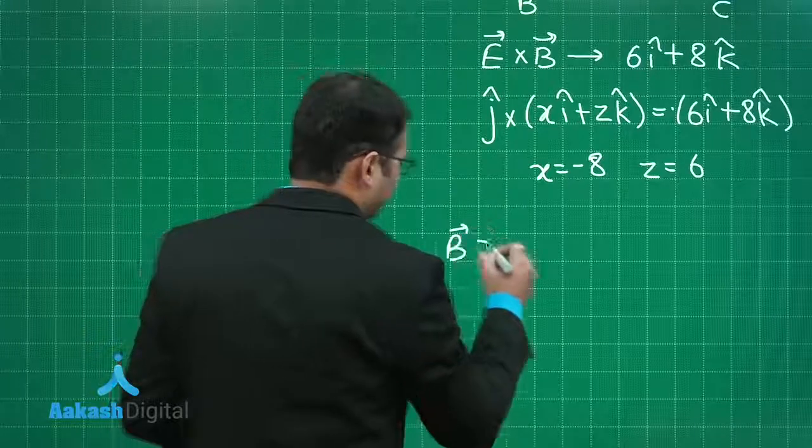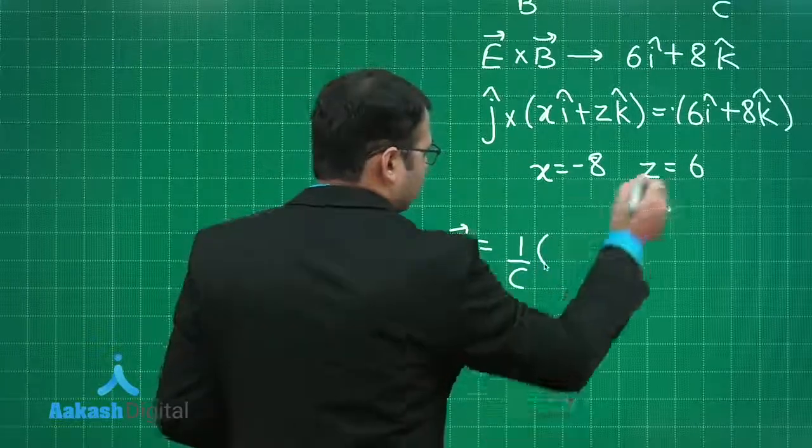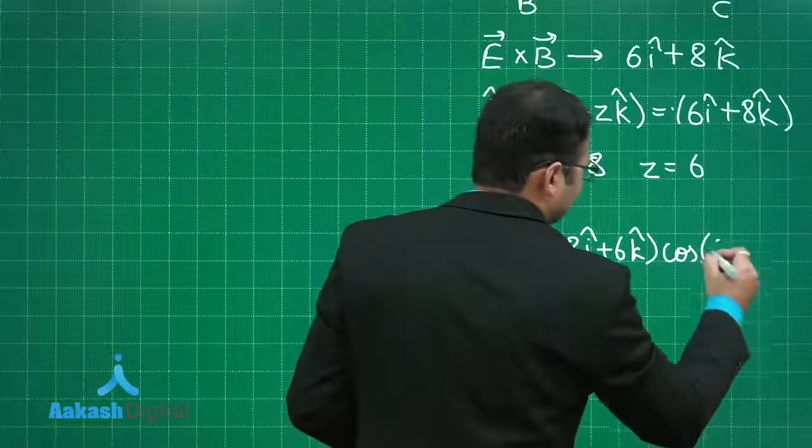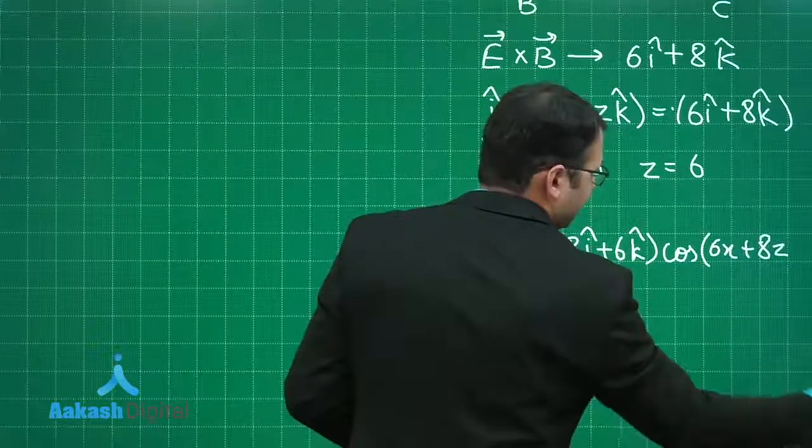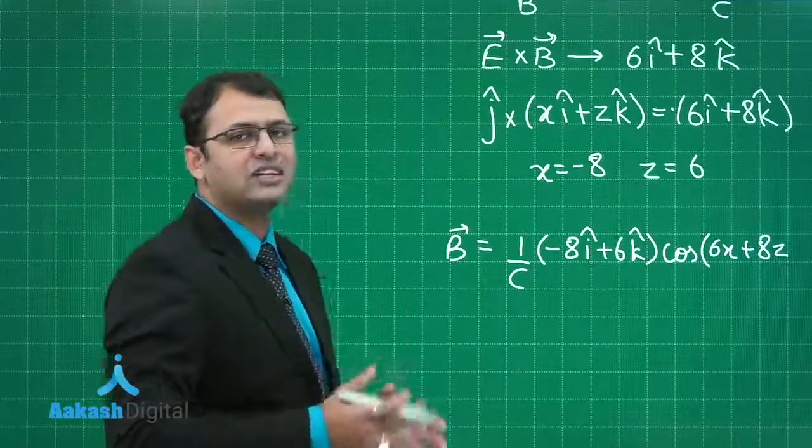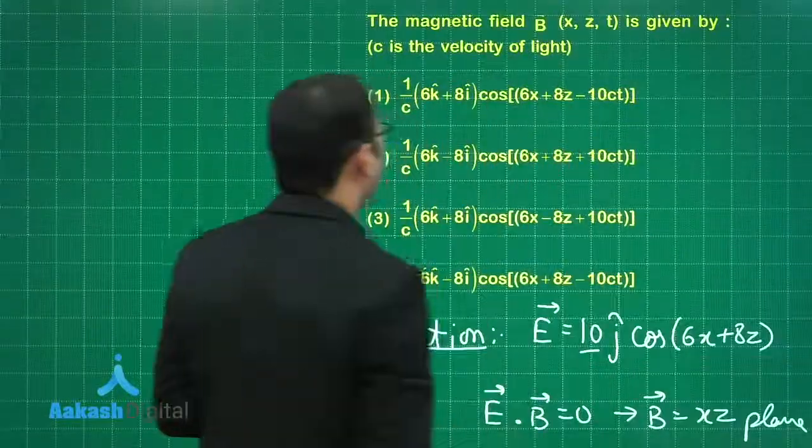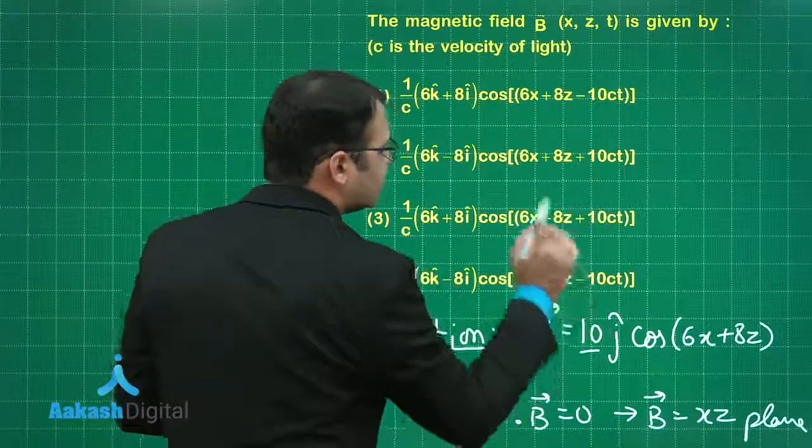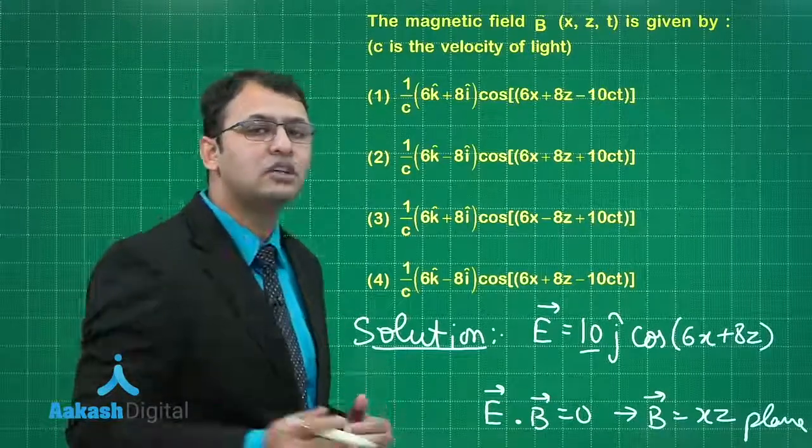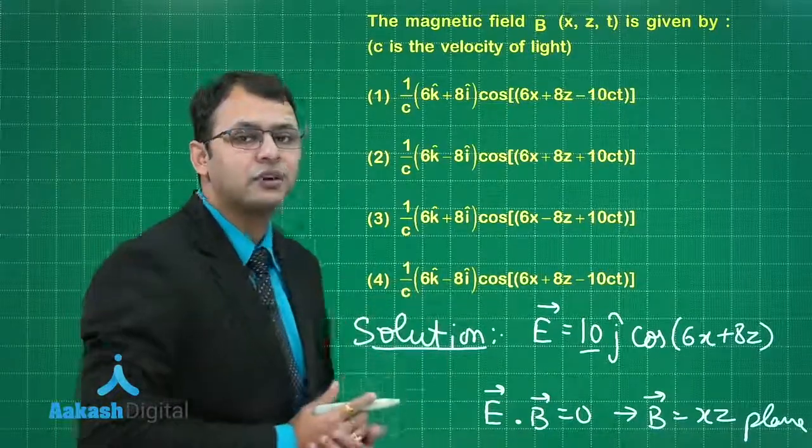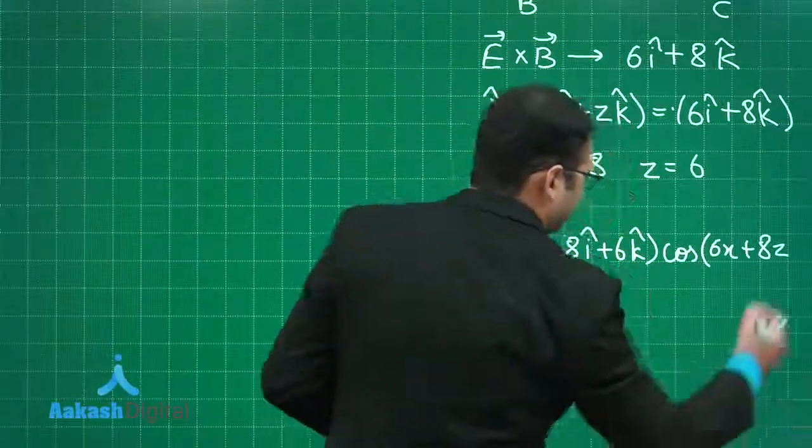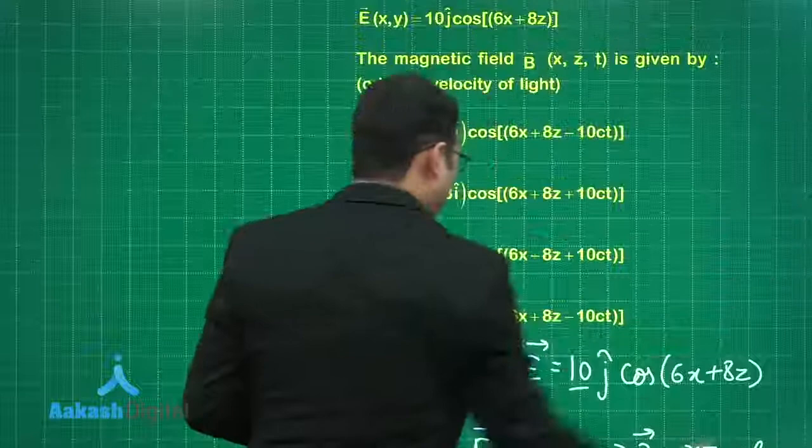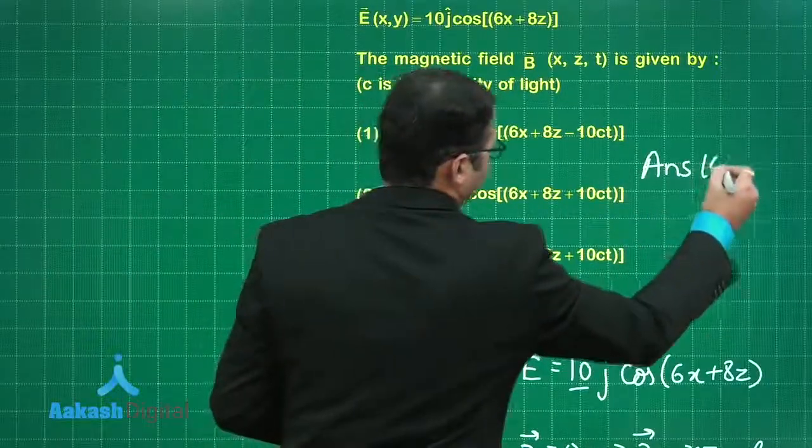For us the magnetic field would be 1 by C times minus 8 i cap plus 6 k cap into cos of 6X plus 8Z. This wave is progressing along the positive direction of XZ plane. With the matching ones I have found options 2 and 4. Whenever a wave progresses along the positive direction, omega t will contain a negative sign. So the part of minus 10CT will be here. According to the options available, the best suited answer would be option number 4.